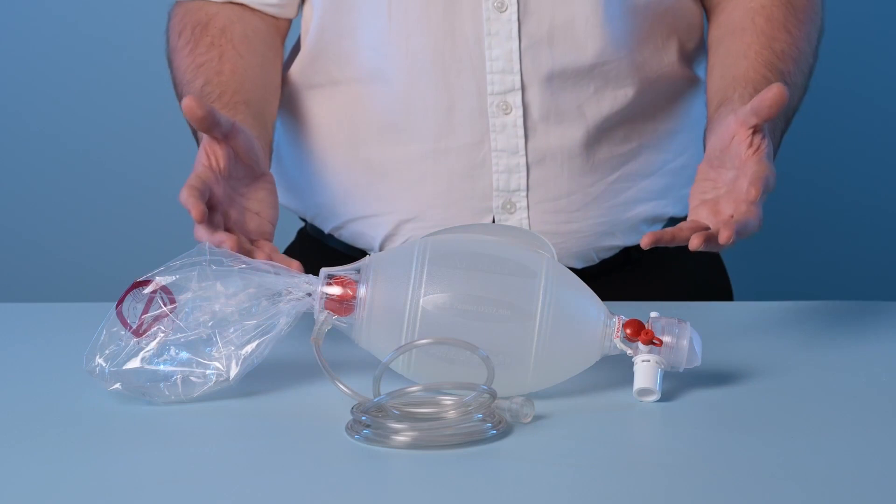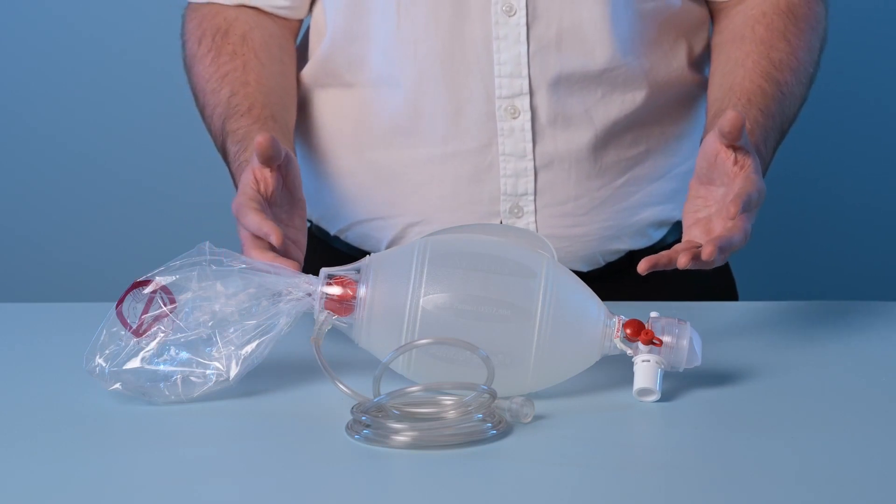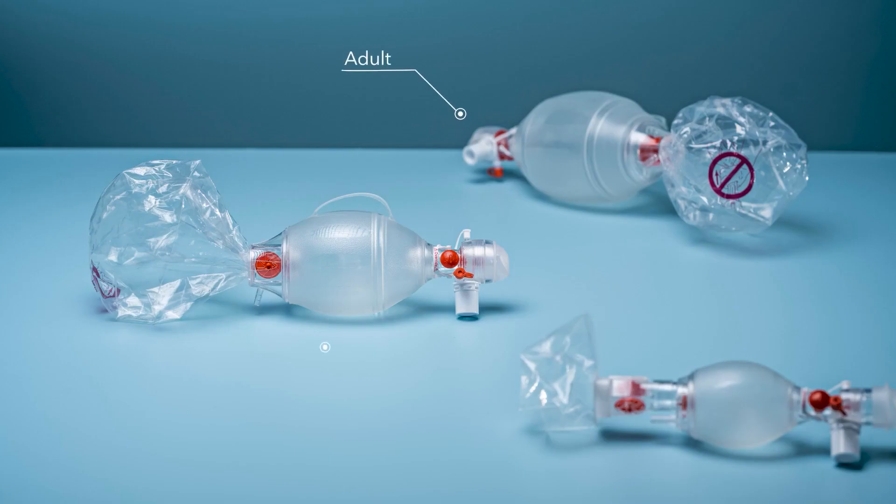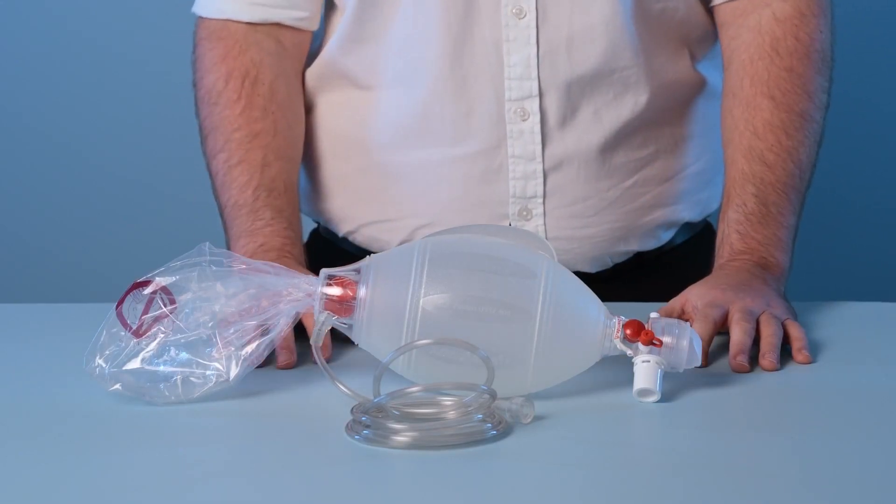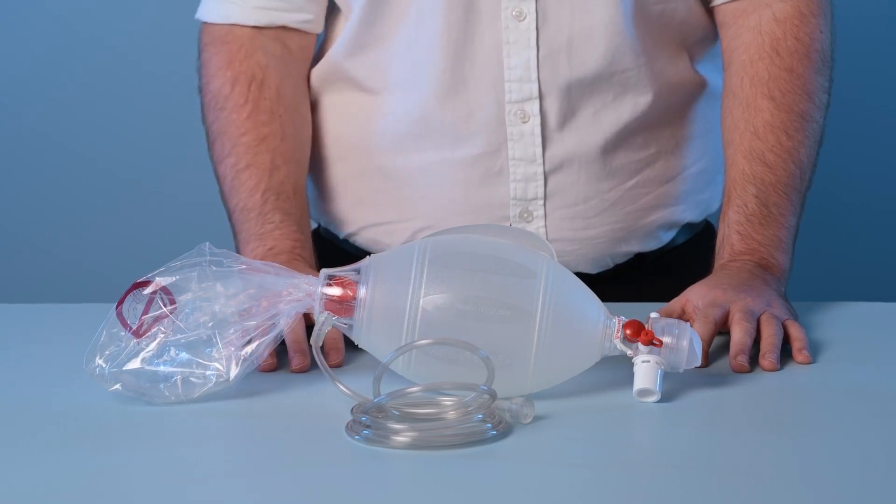The Spur2 is a disposable resuscitator that is available in three sizes: adult, pediatric, and infant. It's available in a range of kits featuring various accessories including face masks of differing sizes, PEEP valves, and manometers as well.